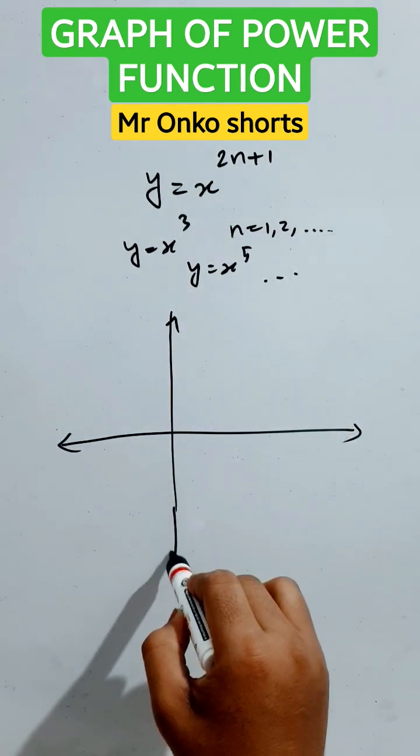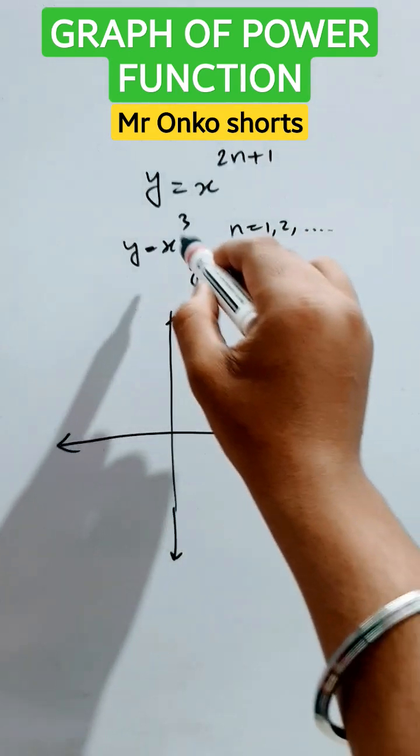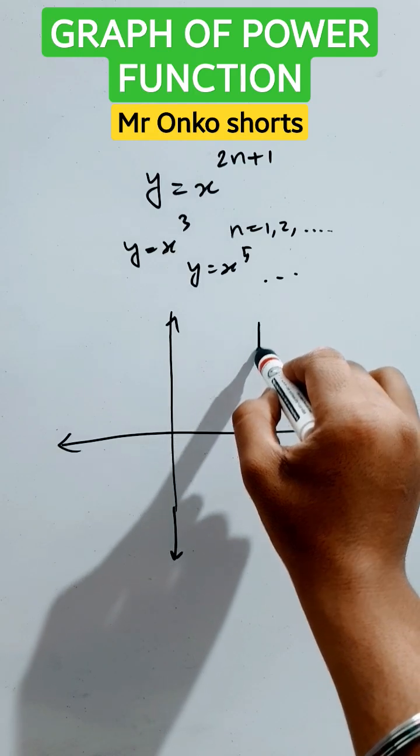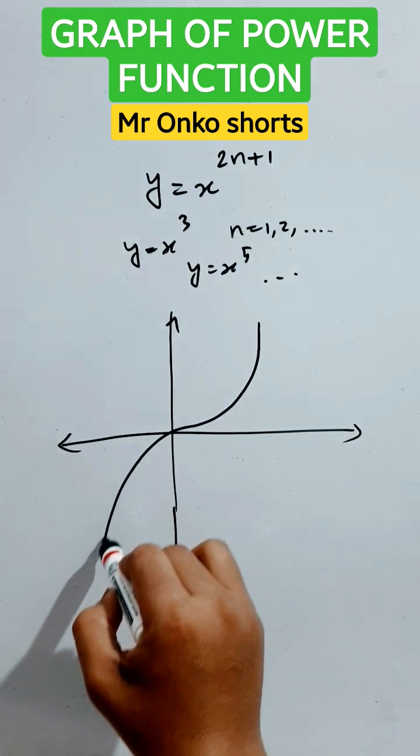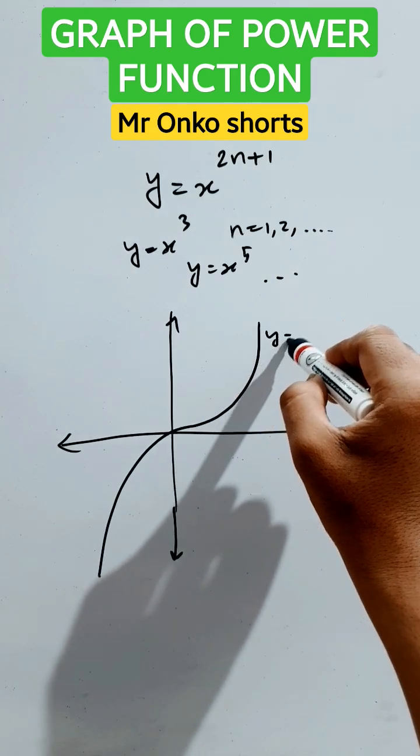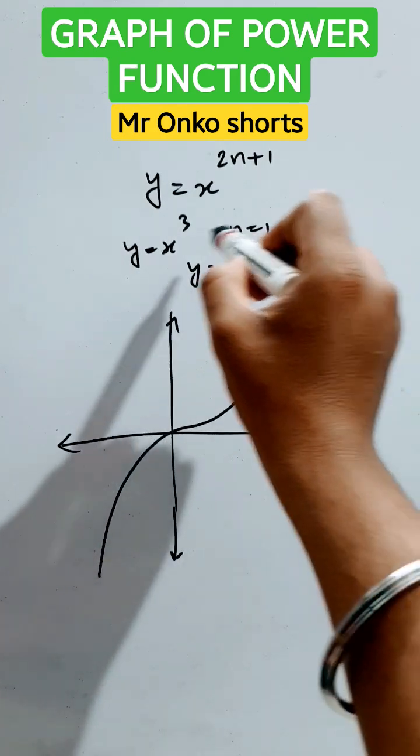Let's see. For y equals to x cube, the graph will be like this. It's passing through the origin. This is y equals to x cube.